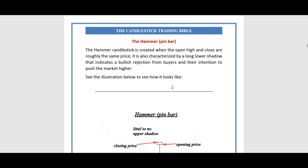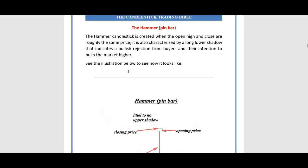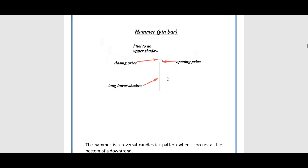The hammer, also known as the pin bar, is created when the open, high, and close are roughly the same price. It is also characterized by a long lower shadow or wick or tail, which indicates a bullish rejection from buyers and their intention to push the market higher. The illustration shows a long lower tail where the body can fit into the tail at least two to three times.